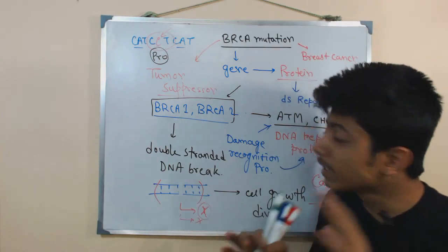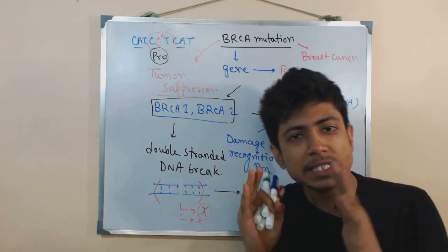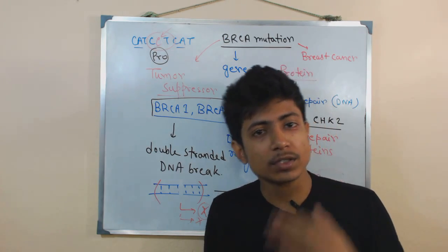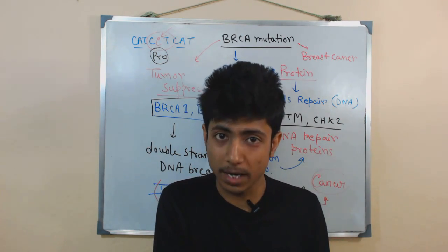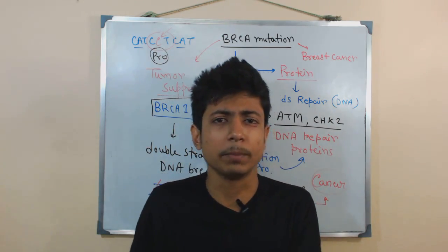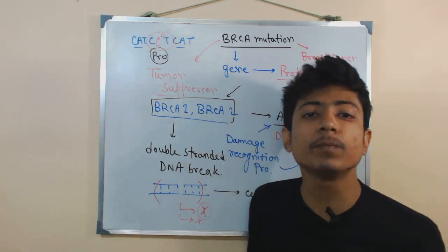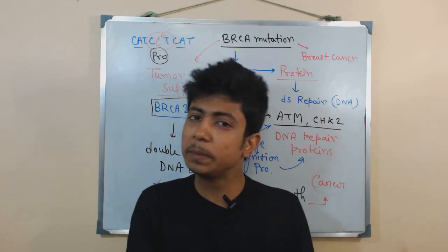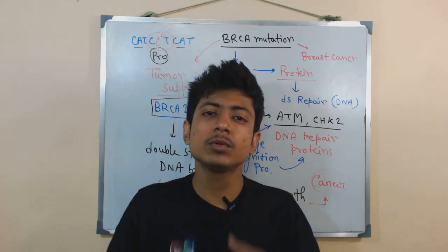Another interesting fact about BRCA mutation is that it is a type of germline mutation — meaning BRCA1 or BRCA2 mutation can be transferred from one generation to another. If one of your parents carries the BRCA mutation, there is a chance of you inheriting it. It can happen to anybody — both male and female. Importantly, a mutation in BRCA does not always necessarily mean cancer, but if there is a BRCA mutation, it is more likely to develop cancer than someone without it.